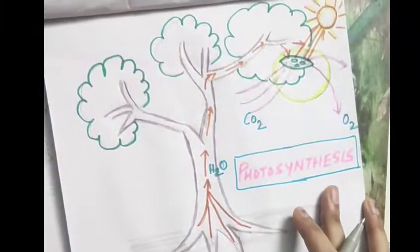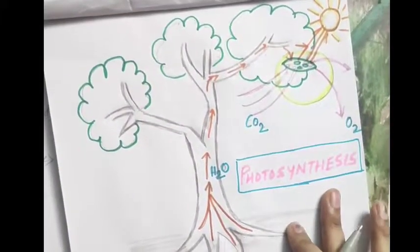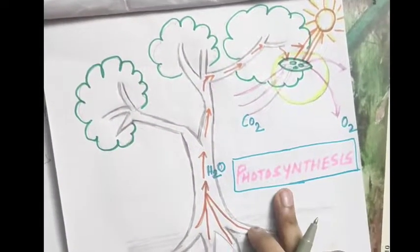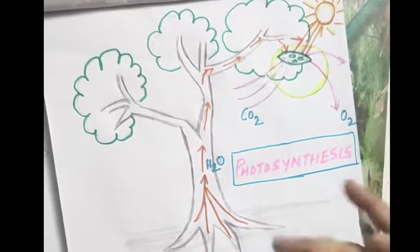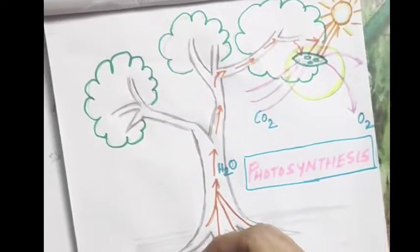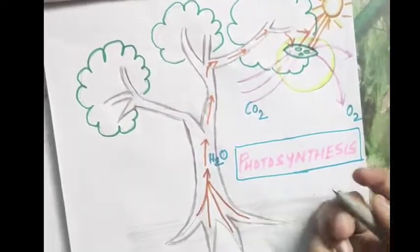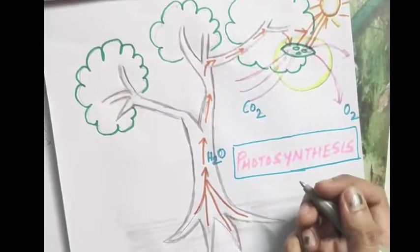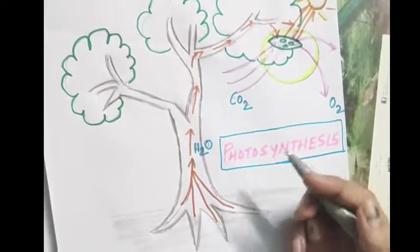Plants are also called the producers. Why are they called producers? Because they can produce their own food. As I was telling you, during photosynthesis, what happens is that water is being absorbed by the roots — the roots absorb water and minerals from the soil.